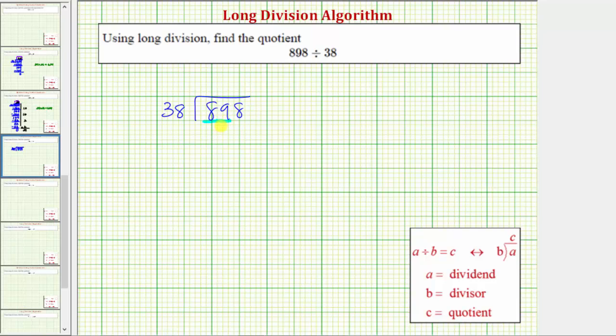We begin by determining how many 38's in 89. And that's not necessarily an easy question. So what we could do is round both 38 and 89 to the nearest 10 and consider that quotient. So 38 would round to 40, and 89 would round to 90. So we could use this quotient to help us determine the first digit in this quotient.